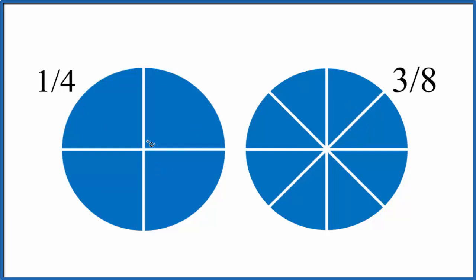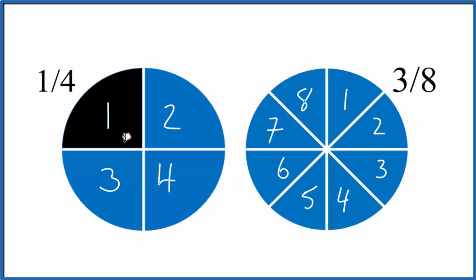So let's label these 1 through 4, and then these 1 through 8. So here, each piece is 1/4. We have part over the whole. So let's shade one of these in. The shaded part, that's 1/4 of our circle.